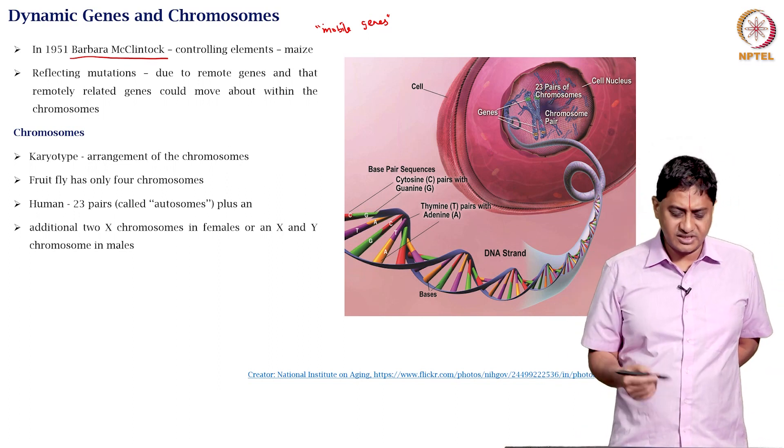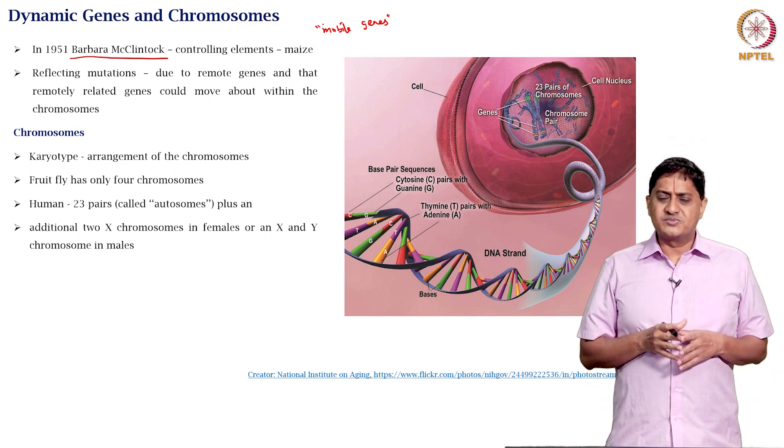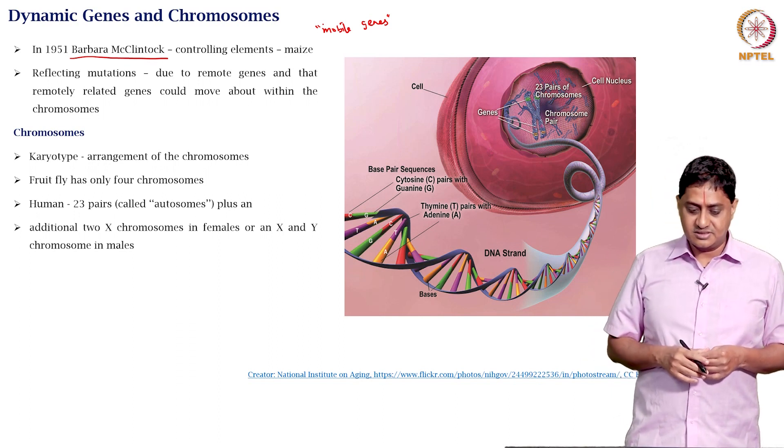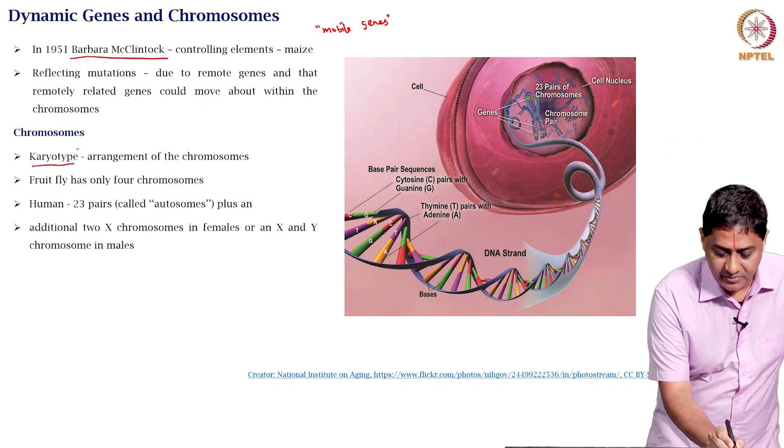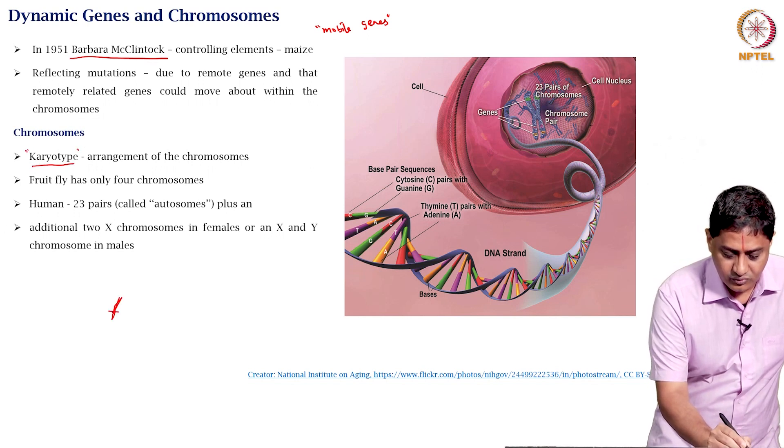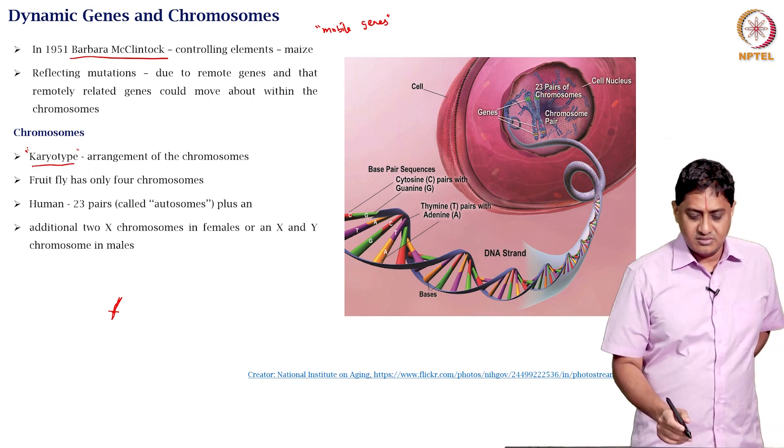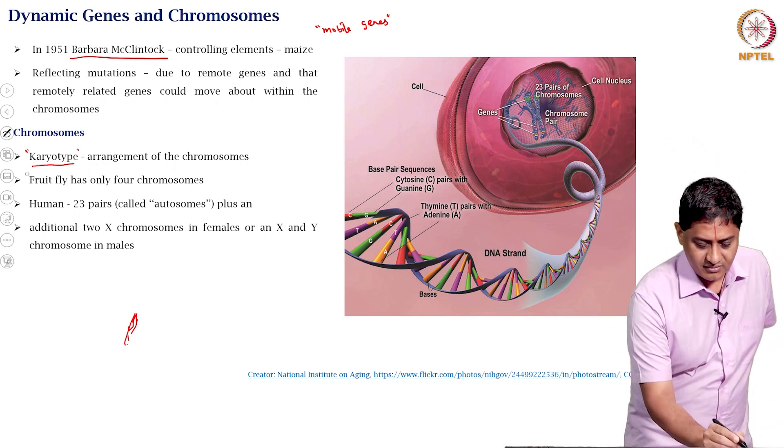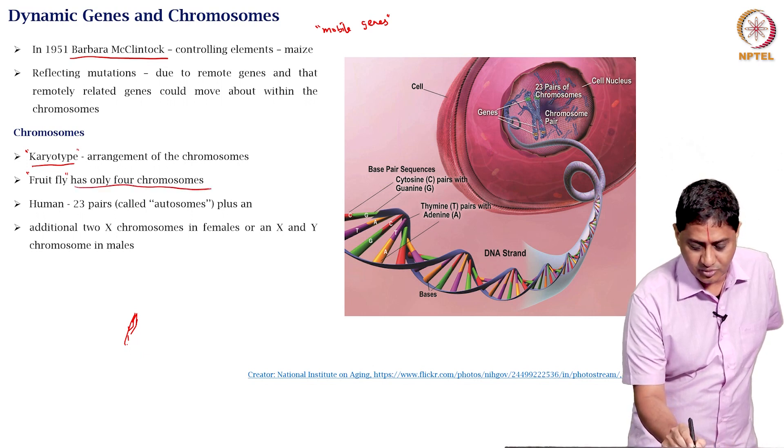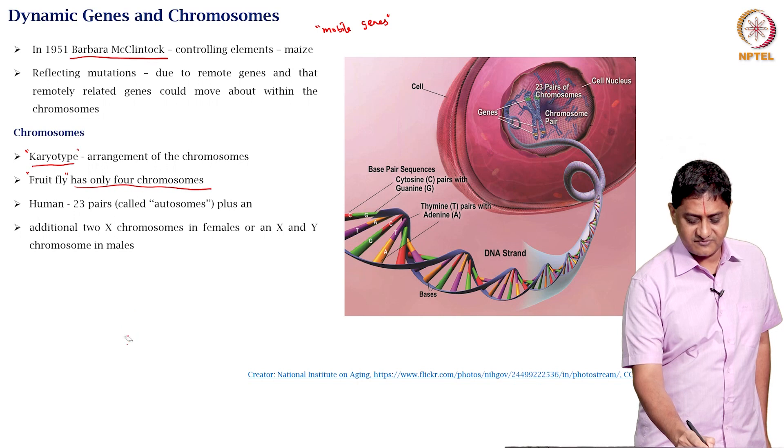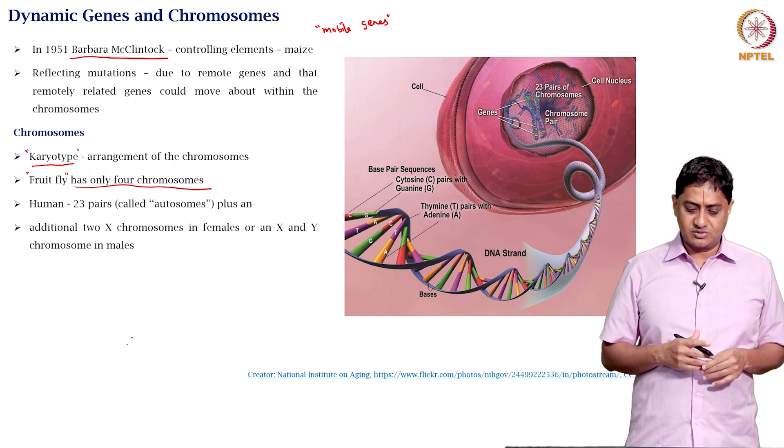How many chromosomes are there was another question of interest. The word karyotype referred to the specific arrangement of chromosomes. Fruit fly as the model system has only 4 chromosomes, which makes it specifically very easy. It is an easy model system to study.